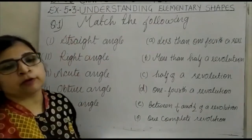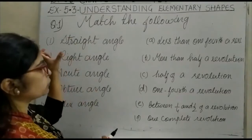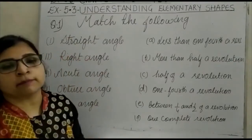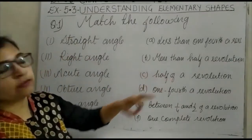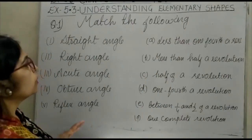First, straight angle. A straight angle's measurement is 180 degrees. So straight angle will match with half of a revolution, because if one revolution is 360, then its half will be 180. So this matches with half of a revolution.